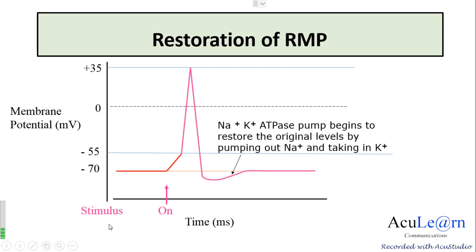The changes which occurred during depolarization and repolarization have caused more sodium inside and more potassium outside. The ionic distribution now has to be brought back to the resting state, which is accomplished by the sodium-potassium ATPase pump, which pumps out sodium and takes in potassium, restoring the membrane potential from minus 72 millivolts back to the resting state.